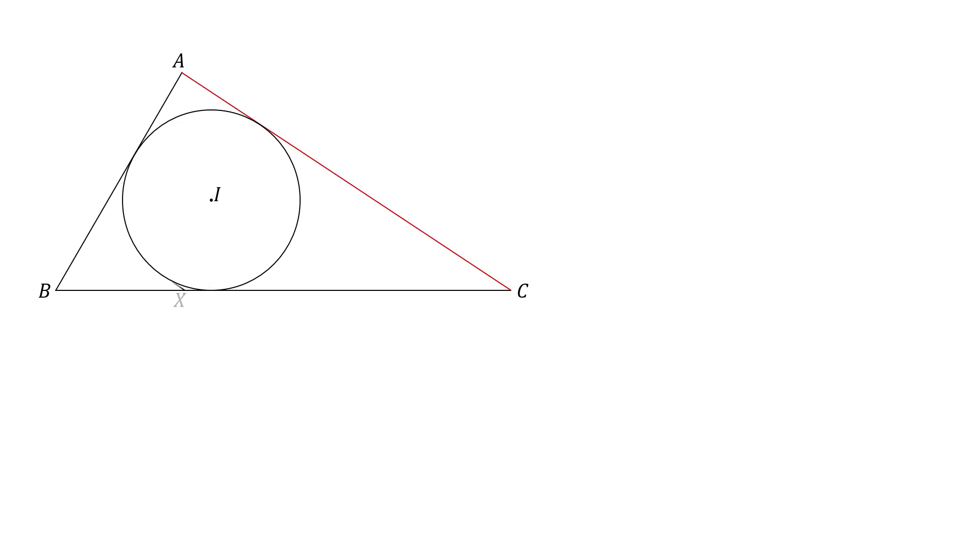X is a point on BC. We can draw a line through X parallel to AC, and this line is also tangent to omega. Similarly, there is another tangent line parallel to AB, and the point on BC is called Y.